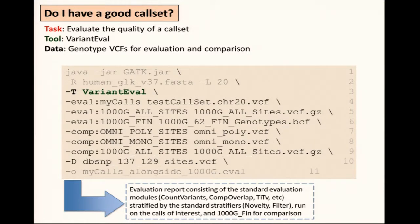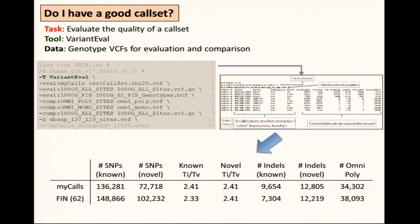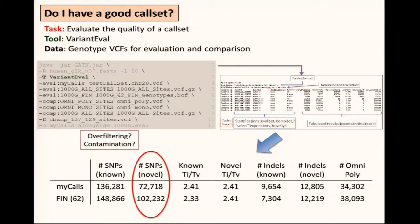The output is a table you can digest by eye or by pulling it into R. You can see the known transitions and transversions — they're a little bit different between my calls and the finished samples, but not too extremely different. The novel is spot on. But in terms of the number of novel SNPs, there's a depletion of about 30,000. I would have expected to see about 100,000 calls not in dbSNP127 just by sequencing 62 random samples from Northern Europe — instead I'm finding 72,000. So this immediately pops out as a potential issue.